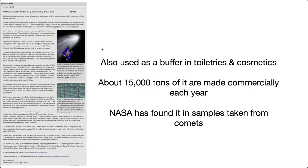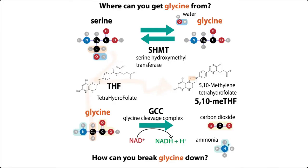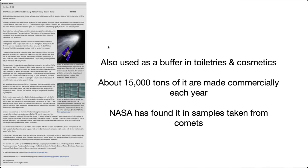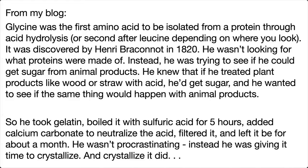Glycine is used as a buffer not just in the lab but also in toiletries and cosmetics. About 15,000 tons of it are made commercially each year, in addition to all of it being made in your body by transferring the carbon from serine onto tetrahydrofolate to give you 5,10-methylene tetrahydrofolate and glycine. NASA has also found it in samples taken from comets, so it's not just us that find glycine cool — maybe some aliens do as well, or at least there's evidence of it on comets, even if there's not evidence of life on those comets.